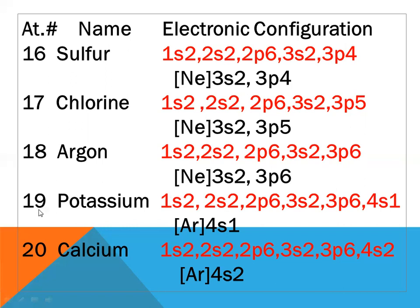Potassium, atomic number nineteen: configuration 1s2 2s2 2p6 3s2 3p6 4s1. Instead of writing all the inner shell configuration, we can write argon, because argon's configuration is 1s2 2s2 2p6 3s2 3p6. We write argon instead of all the inner configuration, showing only the valence configuration as [Ar] 4s1. This is the easiest and most convenient way to write electronic configurations.